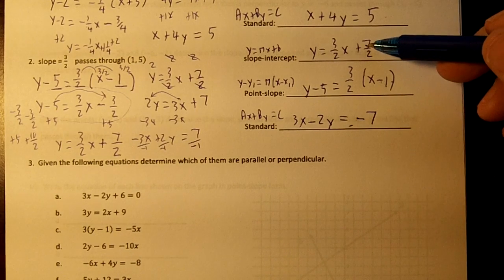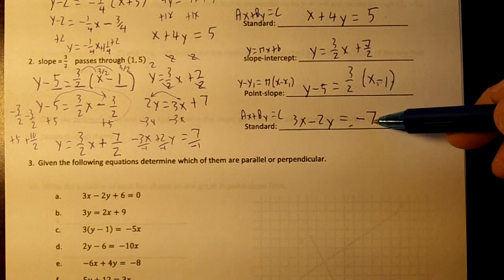So this is slope-intercept. This is point-slope. And this is standard.